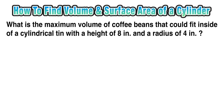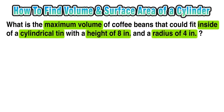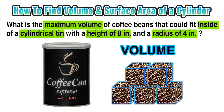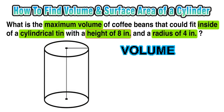Now we're ready to look at this example: what is the maximum volume of coffee beans that could fit inside a cylindrical tin with a height of 8 inches and a radius of 4 inches? The key information is that we want to find the volume of the inside of a cylinder with a height of 8 and a radius of 4. We're thinking about how many coffee beans can fit inside a cylinder-shaped can, and since we measure volume in cubic units, we're thinking of our answer in terms of how many 1-inch cubes of coffee could fit inside this can. We can label the diagram with height equal to 8 and radius equal to 4.